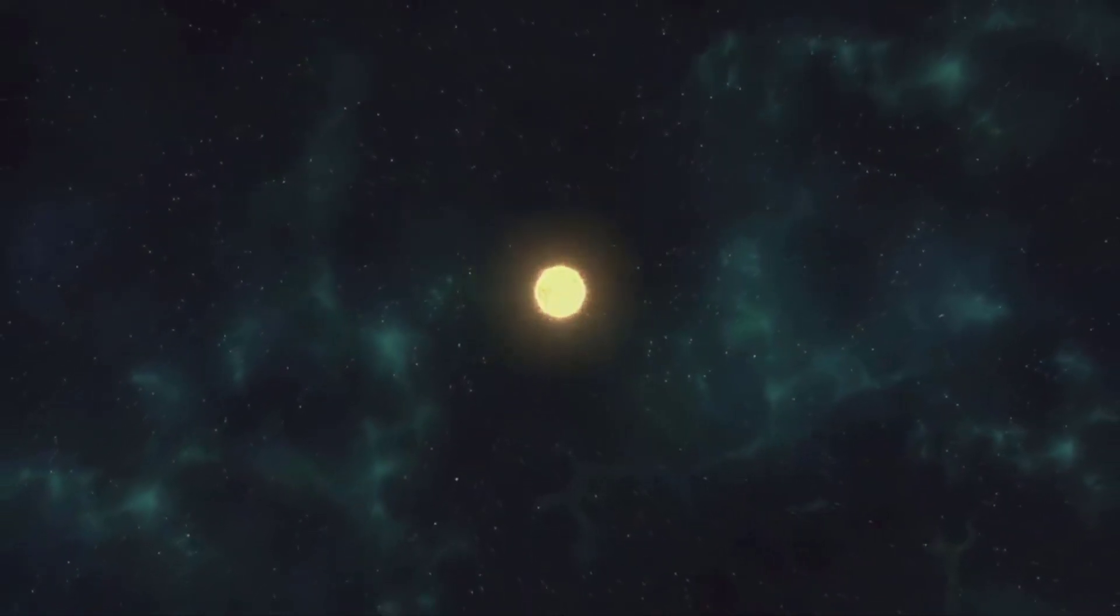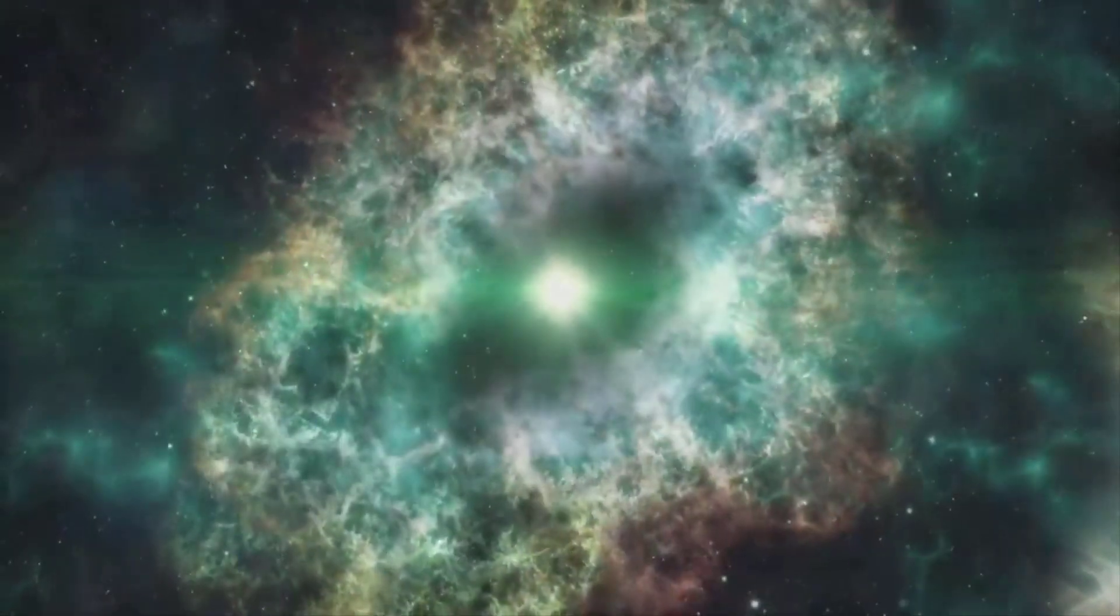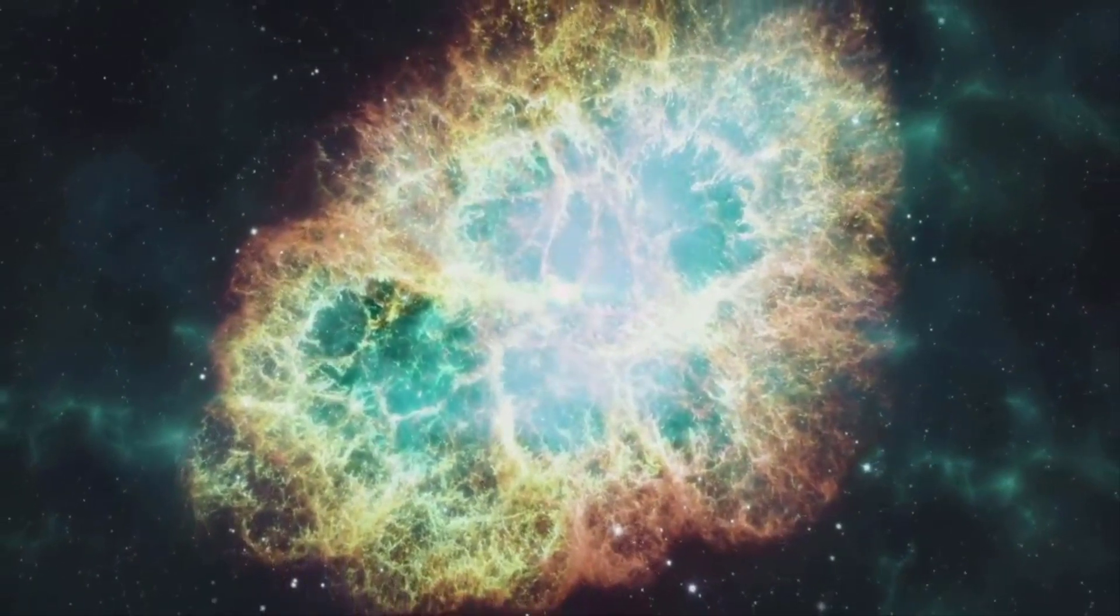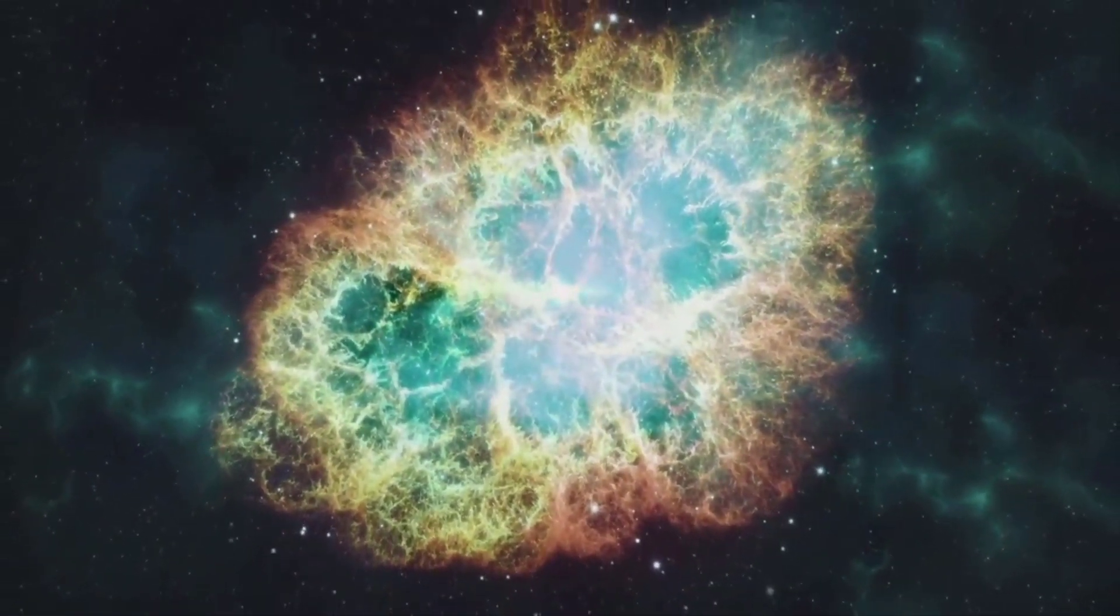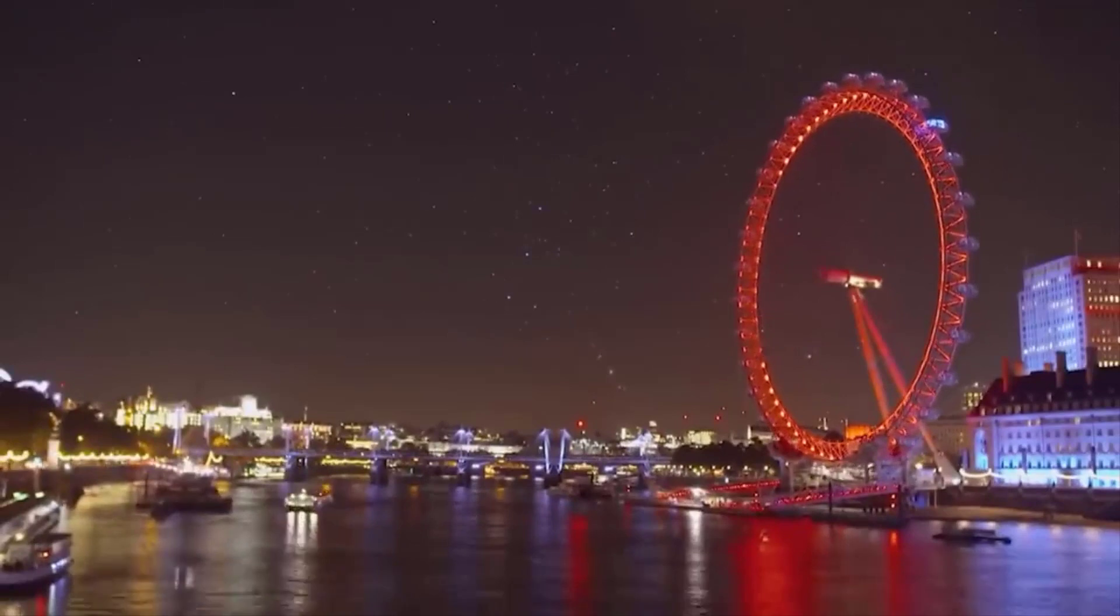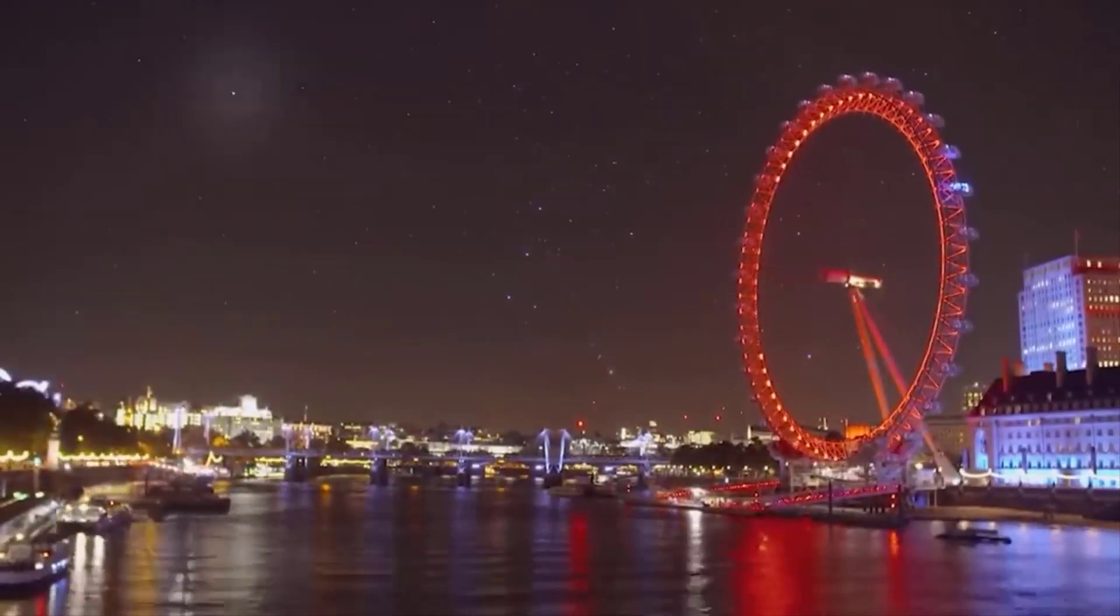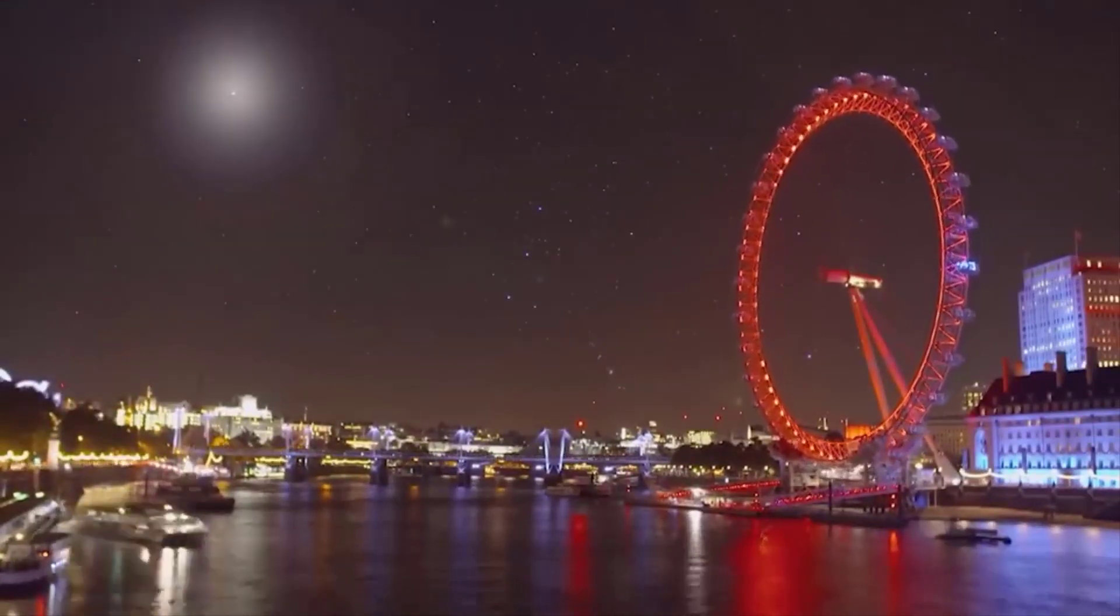Take Antares for an example. It is another red supergiant in the constellation Scorpius. It's even closer to us at just 600 light-years. It can be seen on both hemispheres from March to October.